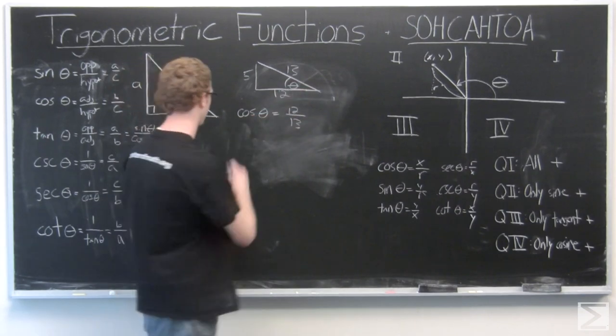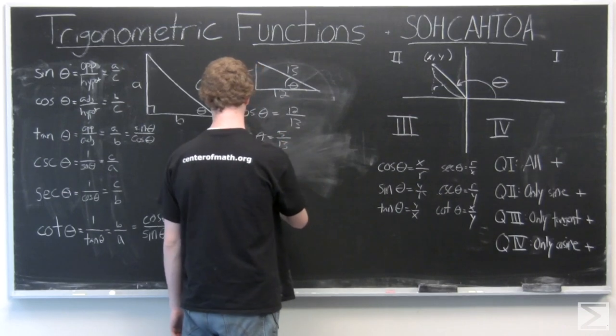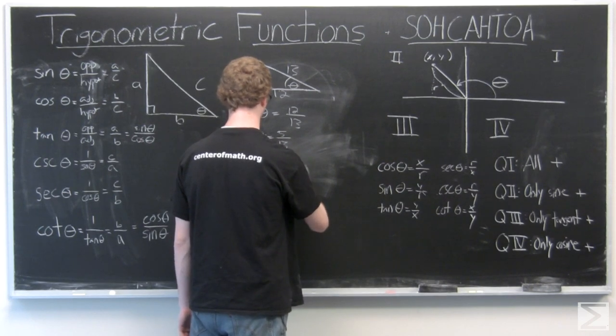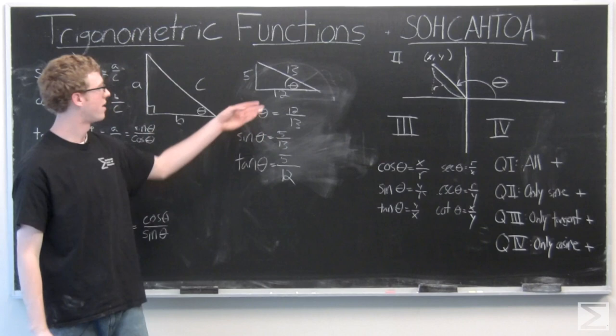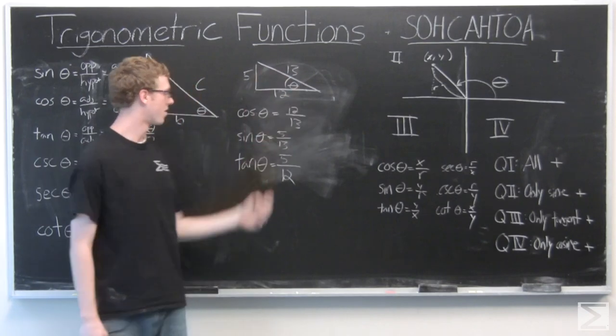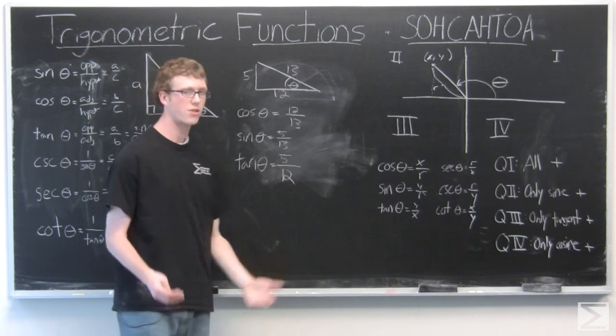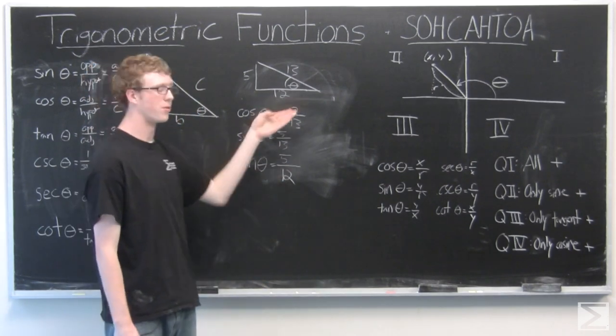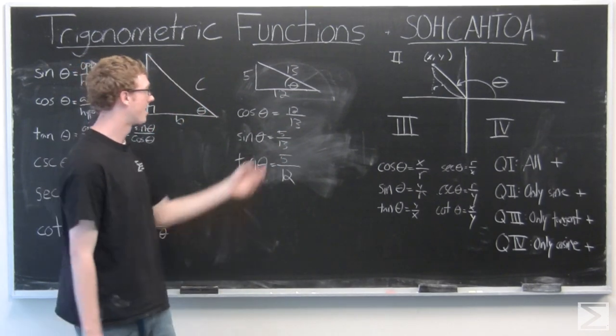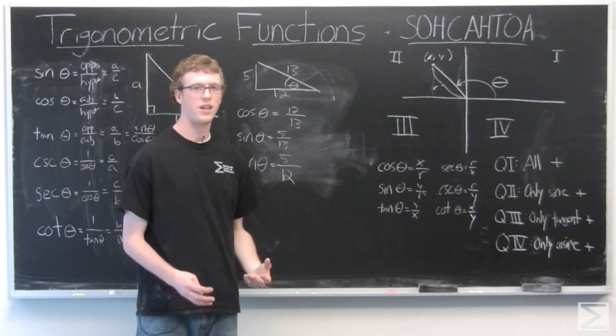Cosine adjacent over hypotenuse. So we have cosine adjacent over hypotenuse, 12 over 13. Sine of this angle, theta, is 5 over 13. And tangent of that angle, theta, is 5 over 12. I'll leave it to you to find the reciprocal trig functions if you'd like. But this is how we would denote the trig functions for this triangle. If we wanted to find this angle, theta, you would use something called an inverse trig function on any of these. We're going to get into that in another video.